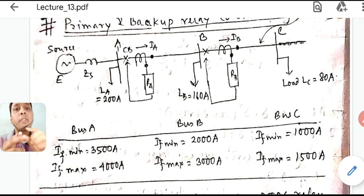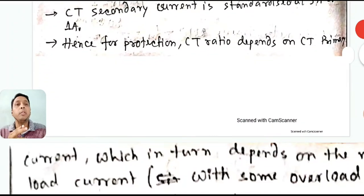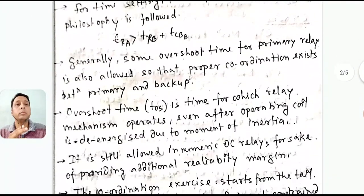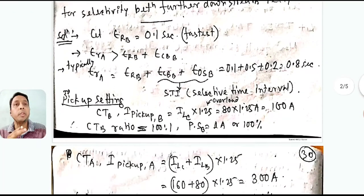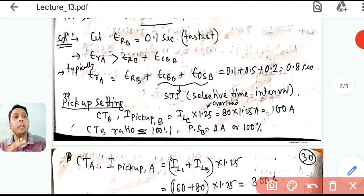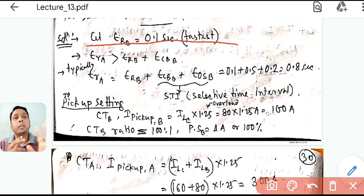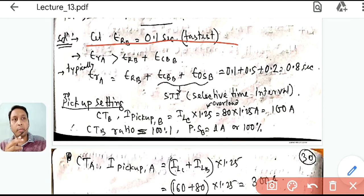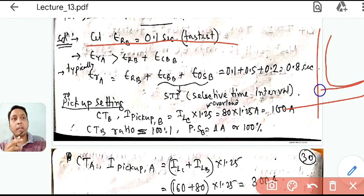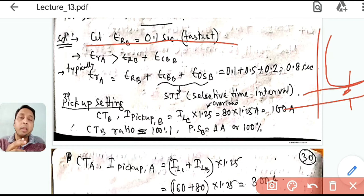We start the DTOC solution from the tail end, which is relay B. Since relay B is in our control, we make it as fast as possible — 0.1 second. For a DTOC relay, the operating time does not depend on current; the curve is flat, so the time is fixed regardless of fault current magnitude.